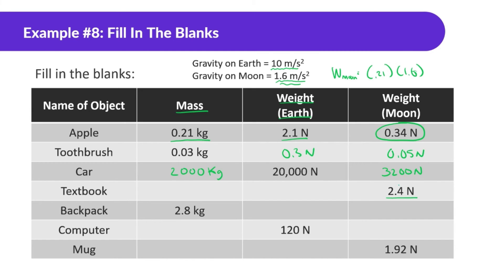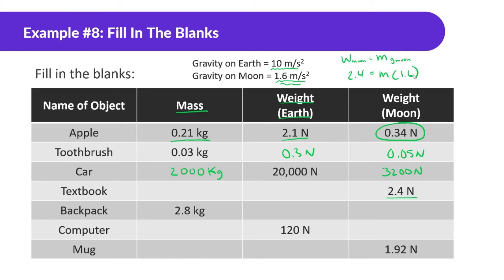This one's a little tricky. We see the textbook has a weight of 2.4 newtons on the moon. Weight on the moon equals mass times gravity on the moon. The weight on the moon is 2.4 newtons; we don't know the mass, but we know gravity on the moon is 1.6. So I'm doing 2.4 divided by 1.6 and I get 1.5 kilograms as the mass. Then I can multiply by 10 to find the weight on Earth, which is going to be 15 newtons.